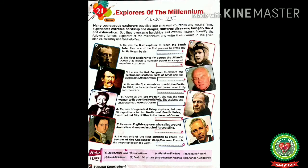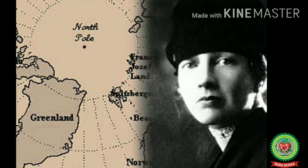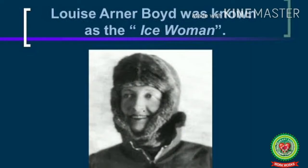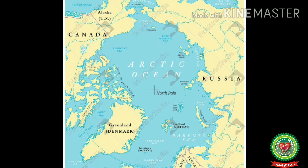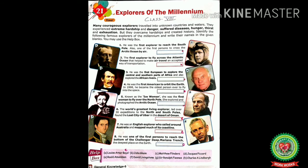In 1998, he became the oldest person ever to fly in space. The other well-known explorer of the millennium was Louise Honoré Boyd. Louise Honoré Boyd was born on September 16, 1887. She was an American explorer of Greenland and the Arctic who wrote extensively of her explorations. In 1955, she became the first woman to fly over the North Pole. She was known as the 'Ice Woman,' and she explored and photographed the Arctic Ocean.